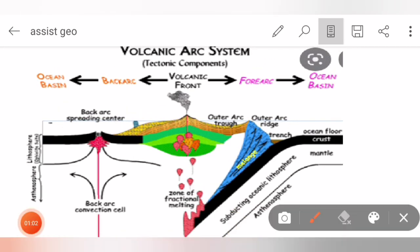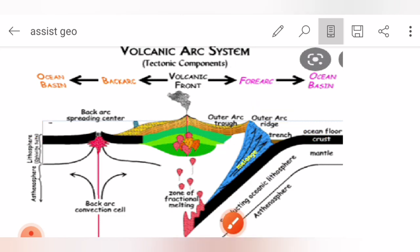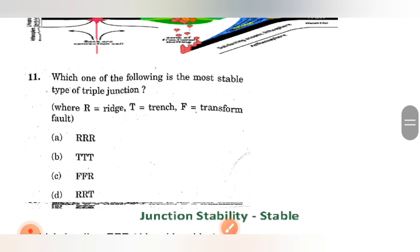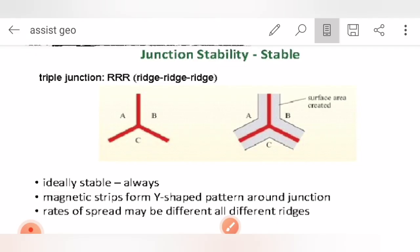Here is the reference: this plate is getting subducted and spreading is going on at the mid-oceanic ridge. Back arc will be present on the mid-oceanic ridge part, and wherever subduction is going on, it will be called forearc basin. Which of the following is the most stable type of triple junction? It is clearly written in the Condie book where all types of triple junction are mentioned - whether it is RRR (ridge-ridge-ridge) or TTT (trench-trench-trench). The most stable one is ridge-ridge-ridge triple junction.